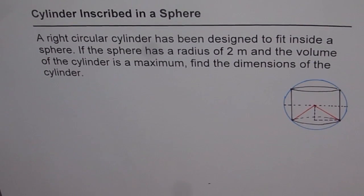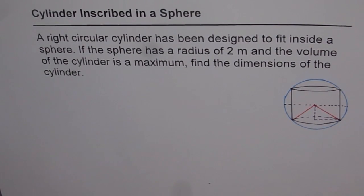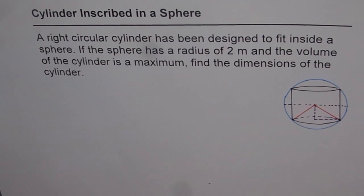Cylinder inscribed in a sphere. A right circular cylinder has been designed to fit inside a sphere. If the sphere has a radius of 2 meters and the volume of the cylinder is a maximum, find the dimensions of the cylinder.